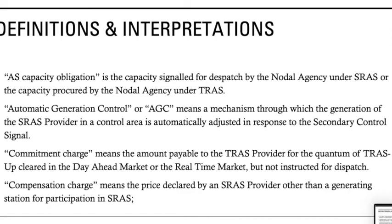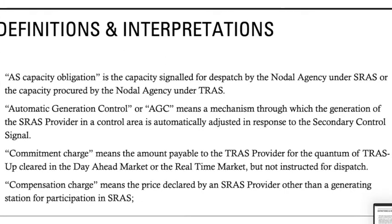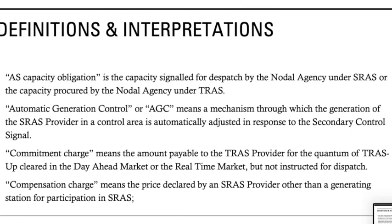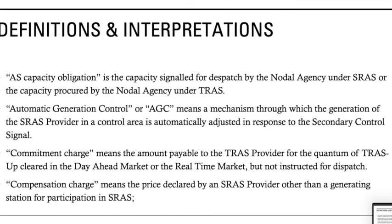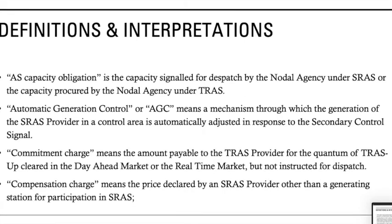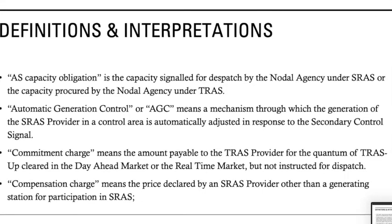The next term is Ancillary Services Capacity Obligation. Basically, it is the capacity signaled for dispatch by the nodal agency under secondary regulatory ancillary services, or the capacity procured by the nodal agency under the tertiary regulatory ancillary services. Basically, if you have opted for ancillary services, then the obligation of the entity to be provided as signaled by the nodal agency such as NLDC or RLDC — that obligation is called the ancillary services obligation.